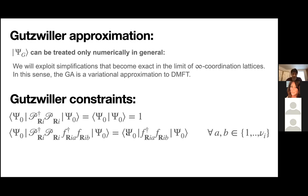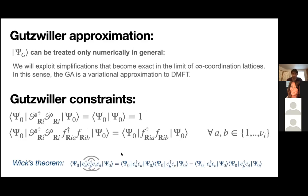The other approximation is called the Gutzwiller constraints, mathematically written down here. From the GA perspective we assume these because of mathematical simplifications we get. From the rotational invariance slave boson perspective, the physical meaning of these equations becomes more apparent. The two equations acquire physical meaning that can help guide us in making sense of why we do what we do.